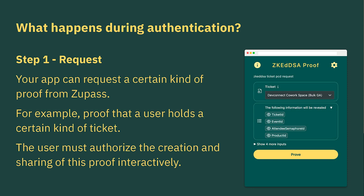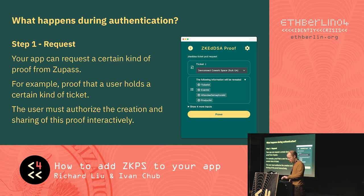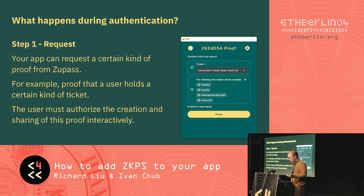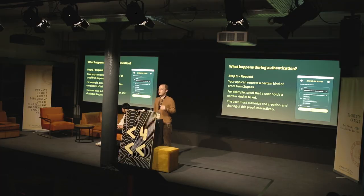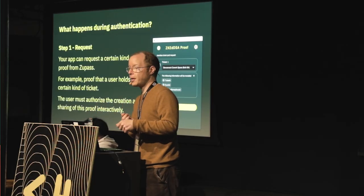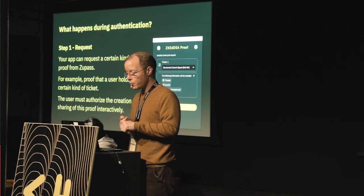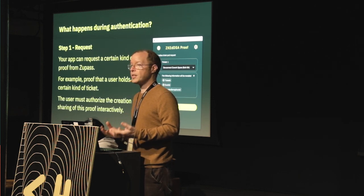The steps you need to implement as a developer are pretty simple. Step one: you have to request the data, and there are certain configuration parameters that go along with that — you can say which kind of fields you want. In this example, four different fields are being requested, but this is configurable. You can also filter to certain types of ticket or certain categories. So you could filter down to ETH Berlin tickets, because we will only accept an ETH Berlin ticket. You could make a set of different tickets — ETH Berlin, ETH Prague, or a DevConnect ticket. It's up to you to configure the kinds of tickets acceptable for authentication in your app.